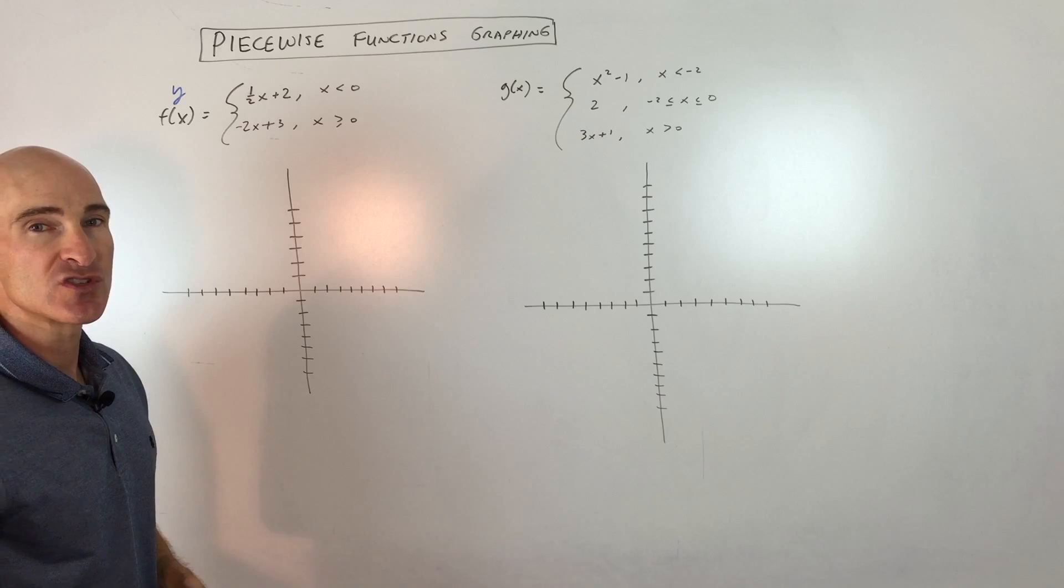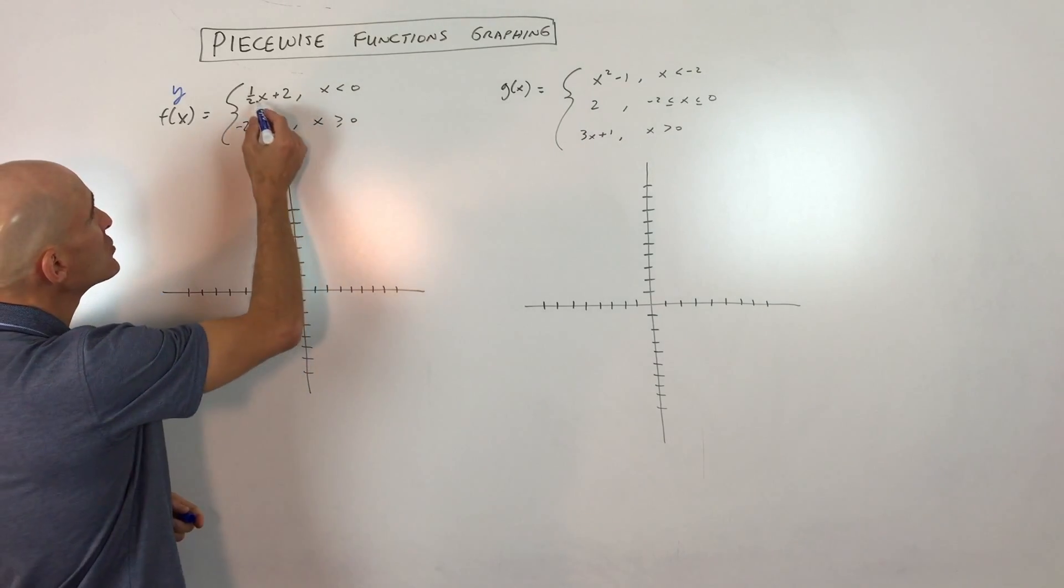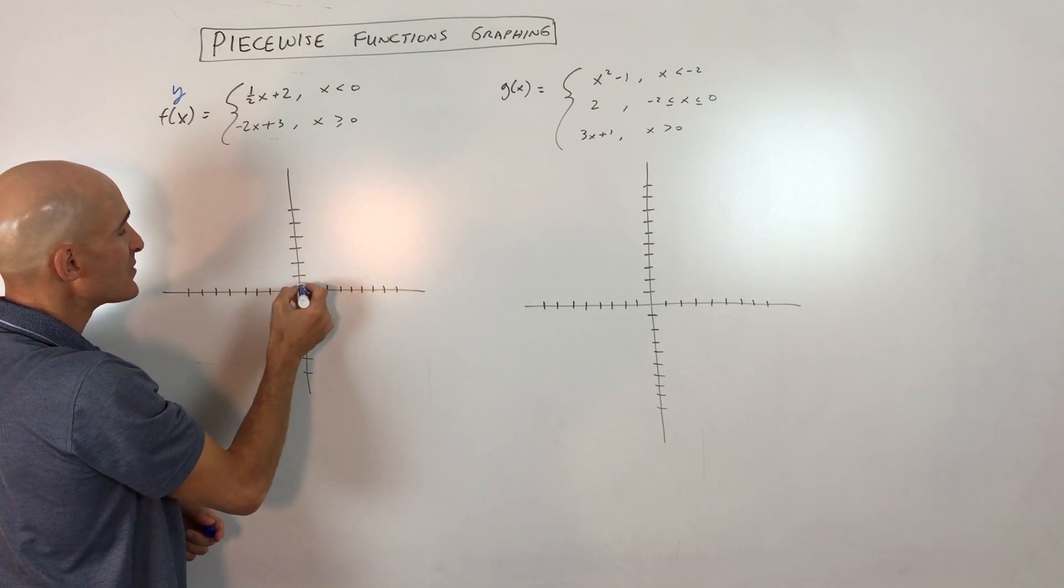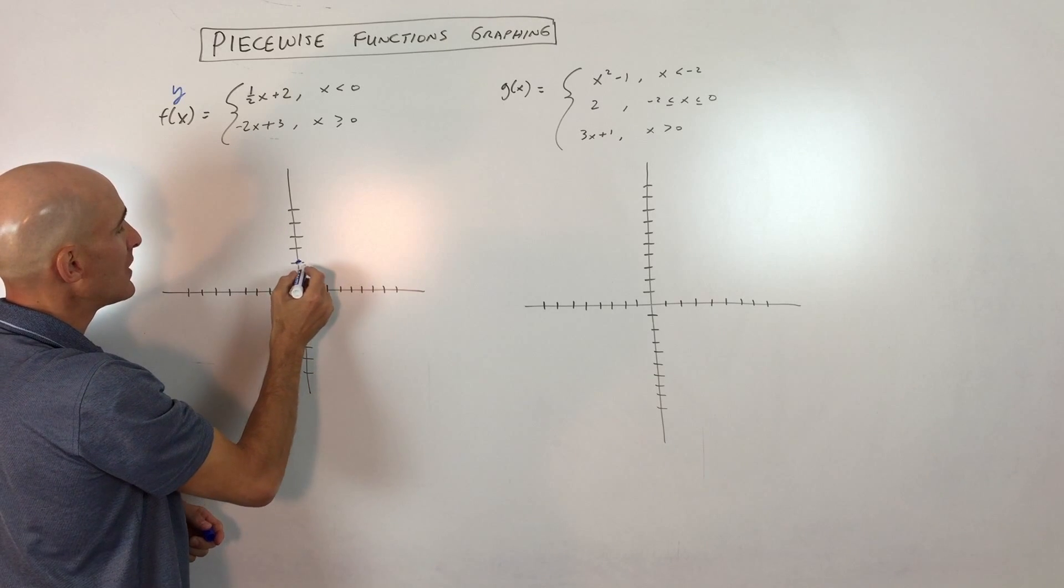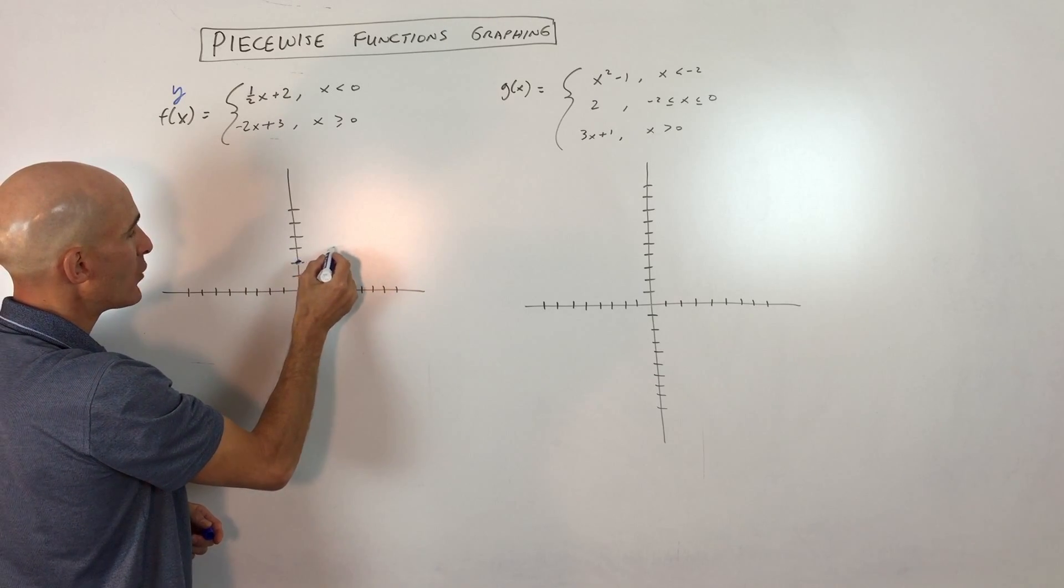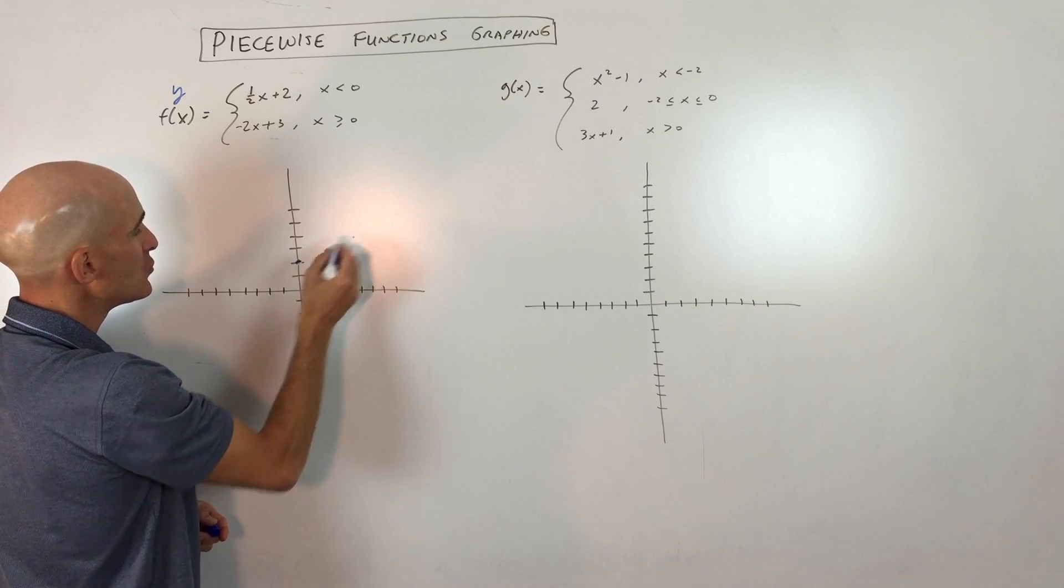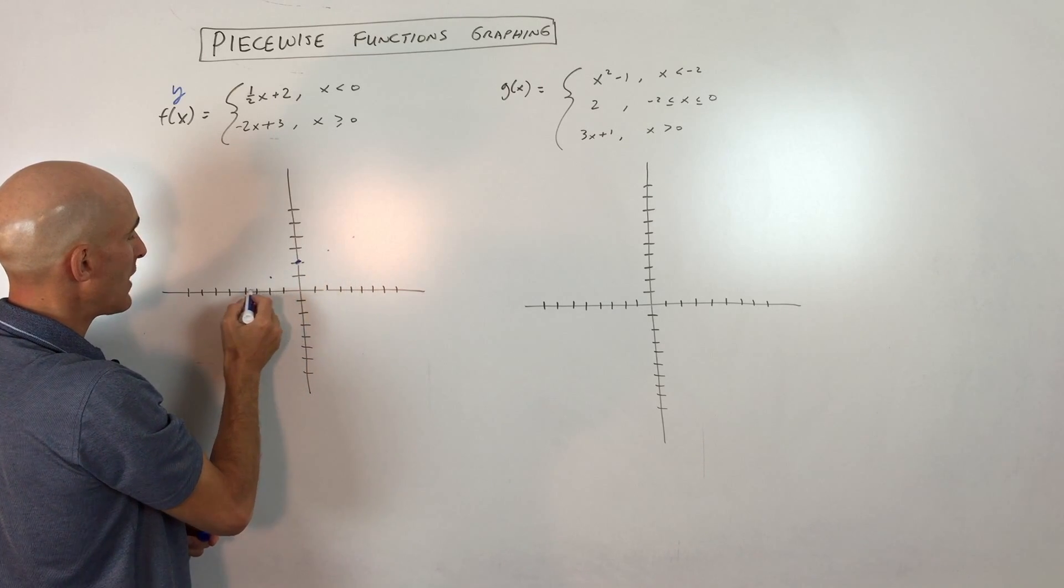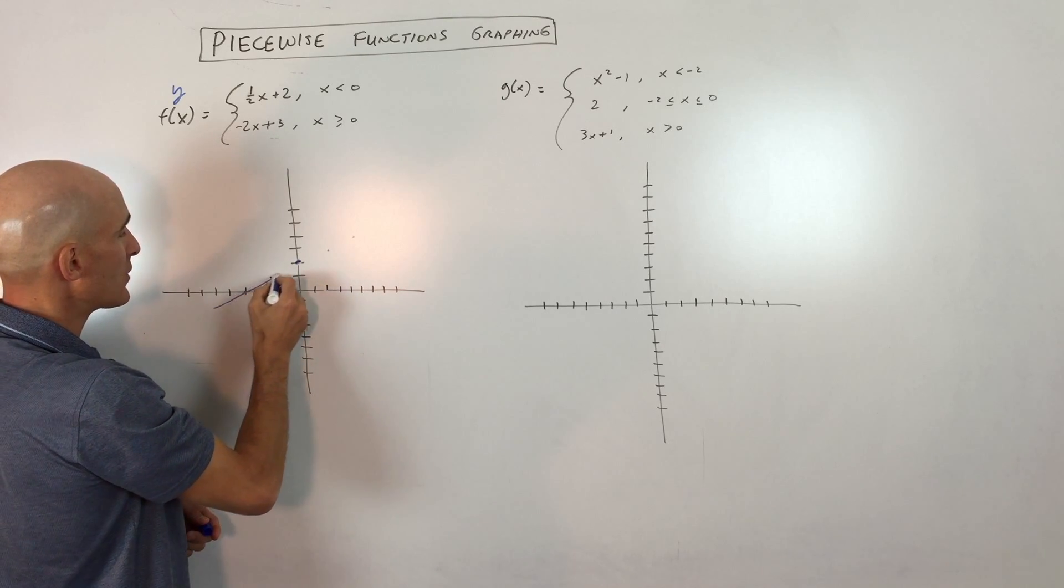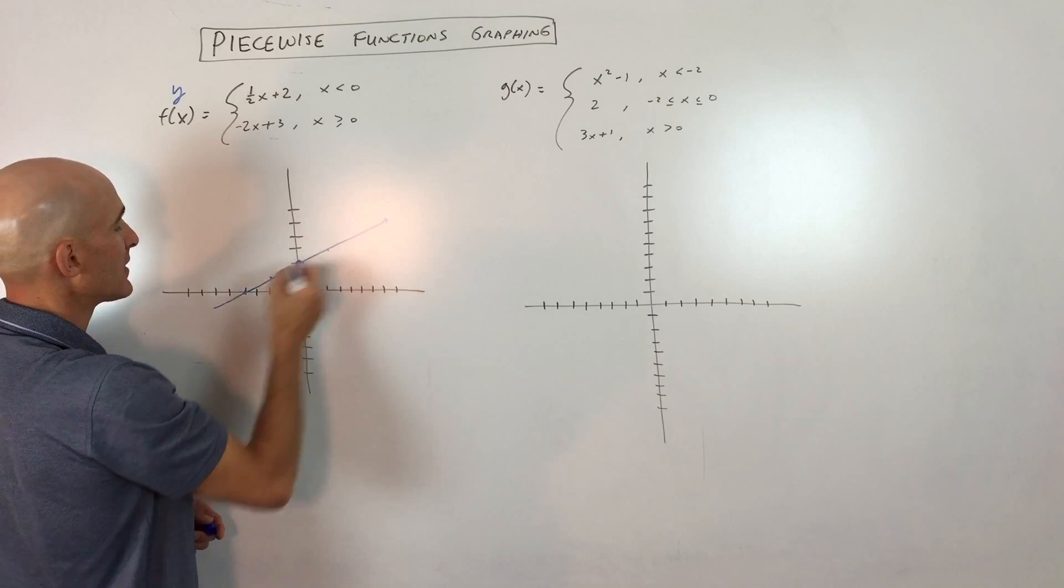So let me show you a couple different ways to approach this problem. One is, let's just go ahead and graph y equals 1/2x plus 2. So the y-intercept is 2 and the slope is 1/2. So up 1 over 2, up 1 over 2, or you could go down 1, left 2, down 1, left 2, like this. And you can go ahead and graph that line like so.